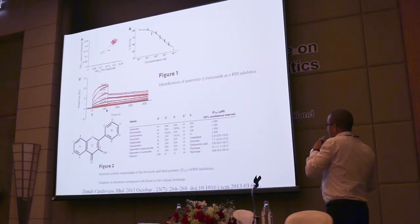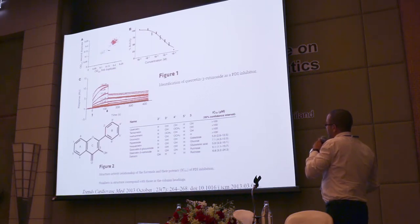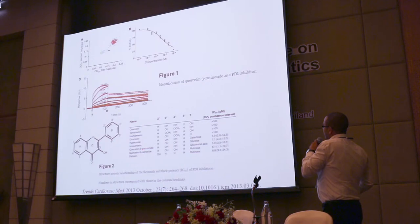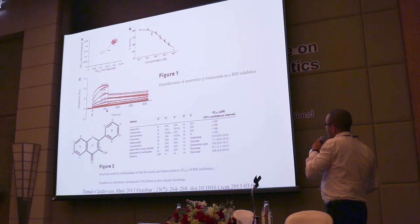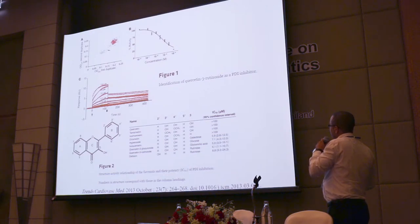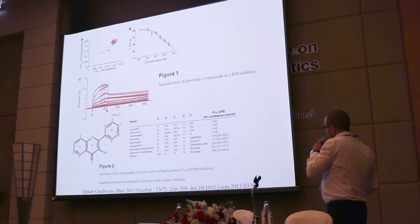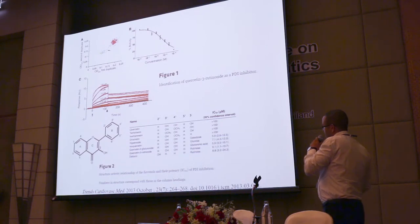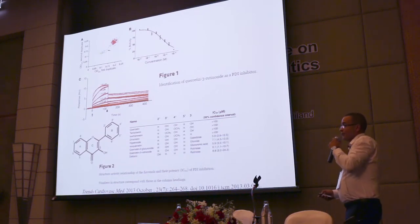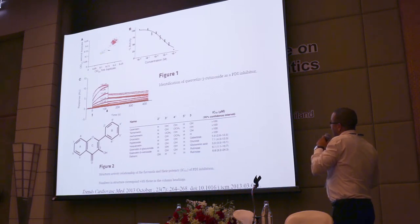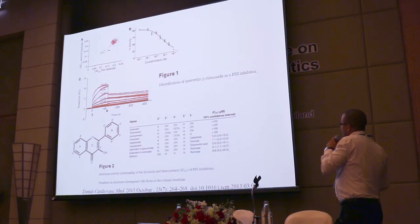One of the agents that have been discovered is a flavonol called rutin, which is basically a quercetin scaffold associated with a carbohydrate. Rutin belongs to the big family of quercetin derivatives, and the major structural difference resides at carbon number three, where different groups can be found. The nature of this group is very important since it determines whether the compound is active or not.